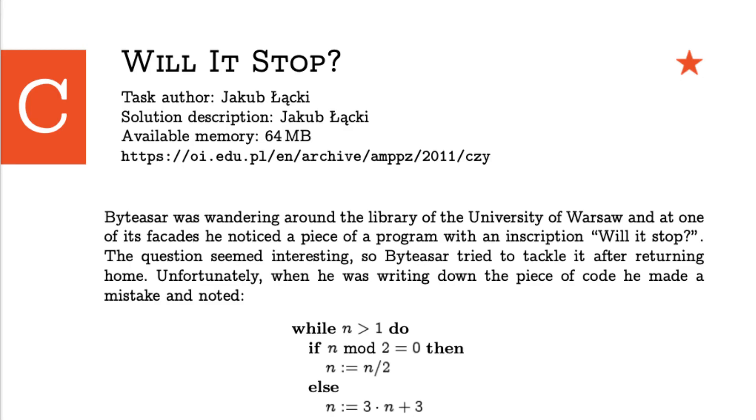Here's how the problem statement goes. Baitassar was wandering around the library of the University of Warsaw, and at one of its facades, he noticed a piece of a program with an inscription, Will it stop? The question seemed interesting, so Baitassar tried to tackle it after returning home. Unfortunately, when he was writing down the piece of code, he made a mistake and noted the following. And the rest of it is what we have discussed so far.